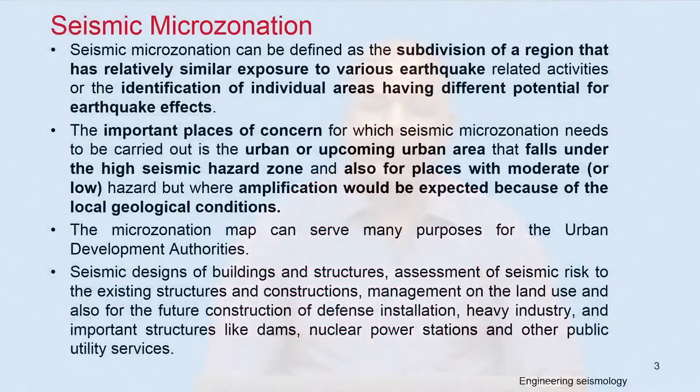Microzonation is a delineation of area — basically the region is subdivided based on the exposure to various earthquake effects. Any grid or area that you delineate has to spell out what different earthquakes are expected and how accurately they are assessed. That is the main way the microzonation map has to be represented. Global-scale maps are macrozonations; when you come to the city level, it should be done at micro level.